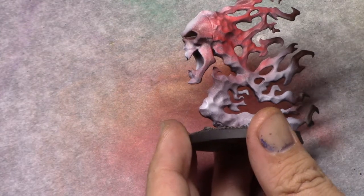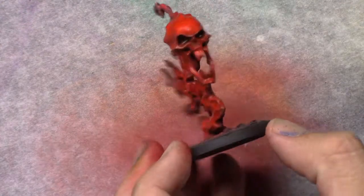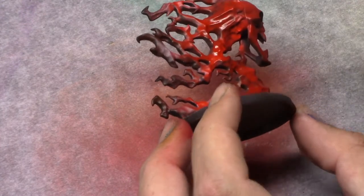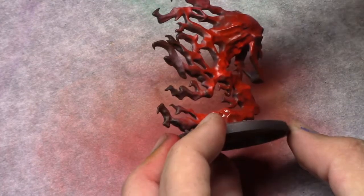Then I take the Fire Red again and I just go over all the white parts. Now you do have the chance to build up the red if you want to. So if you go over one part several times the red will get more vibrant.